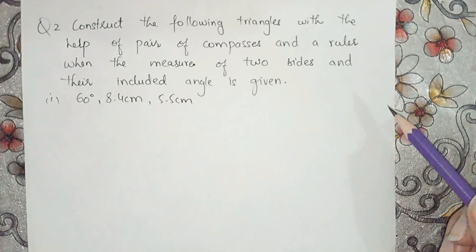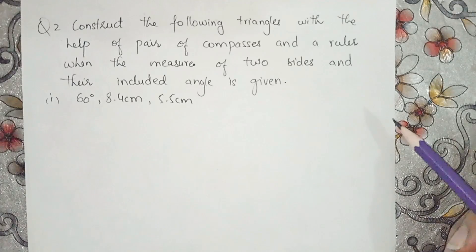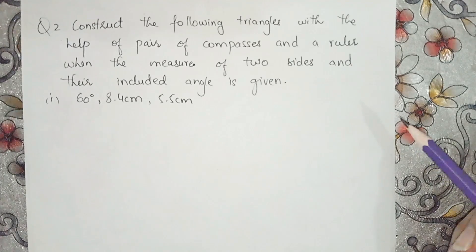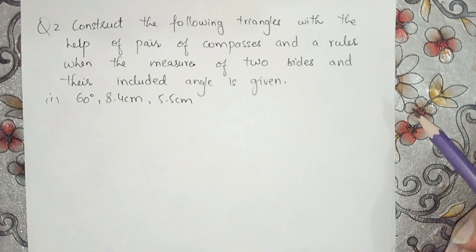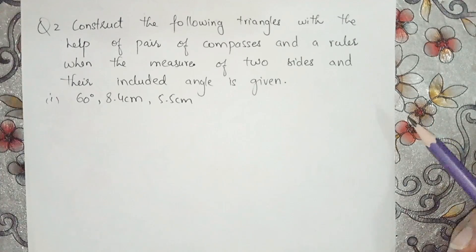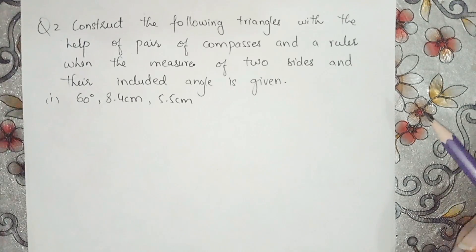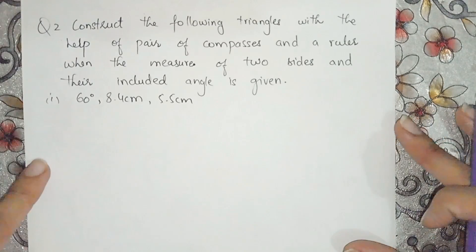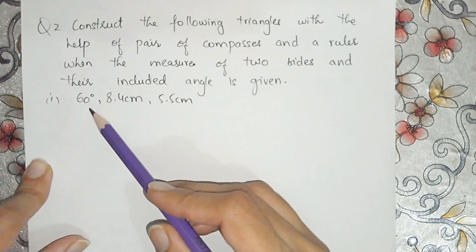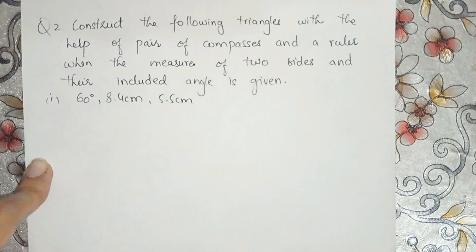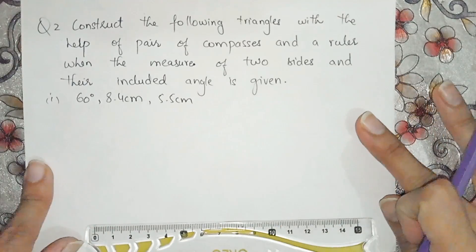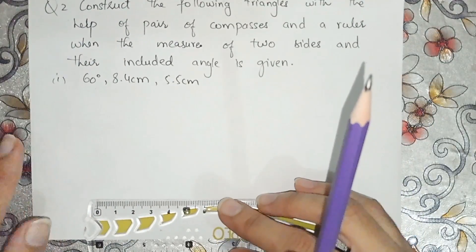Now question number 2: construct the following triangles with the help of a pair of compasses and a ruler when the measure of two sides and their included angle is given. We have been given one angle and two sides. First we have to draw a line of 8.4 cm.